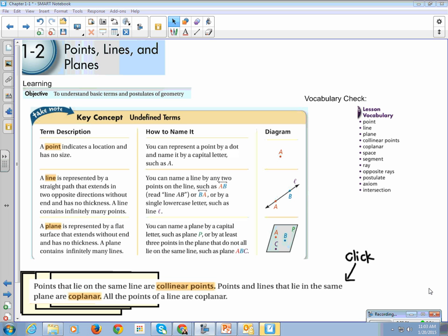So points that lie on the same line are called collinear points. Points that lie in the same plane are coplanar. All the points of a line are coplanar. So if it's on a line, it's on the plane that goes through the line. Points that lie on the same line are collinear. Points that lie in the same plane are coplanar. And all points of a line are coplanar.